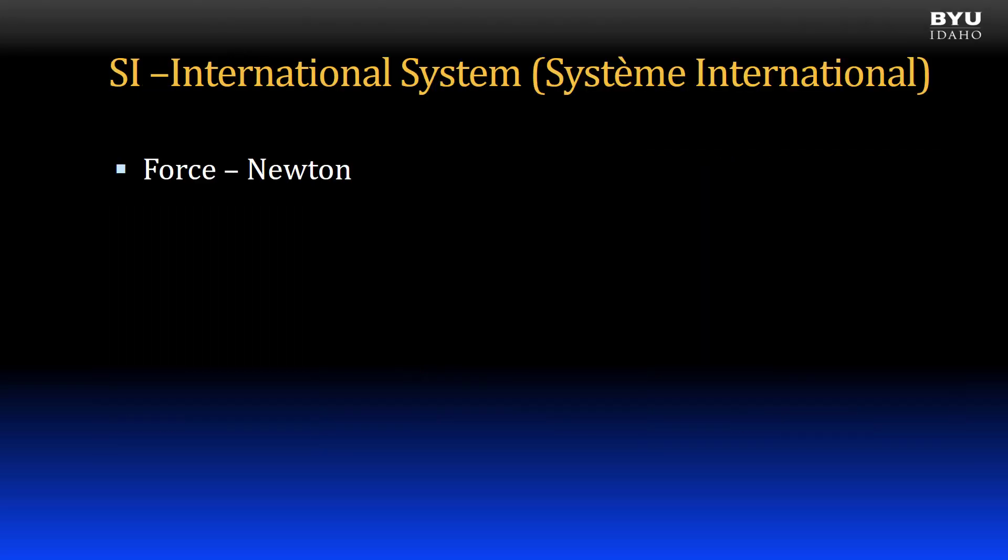Let's first look at the SI system and particularly how the force unit is derived. Let's begin with the simple equation weight equals mass times the gravitational constant g. In the metric system, g is equal to 9.81 meters per second squared.